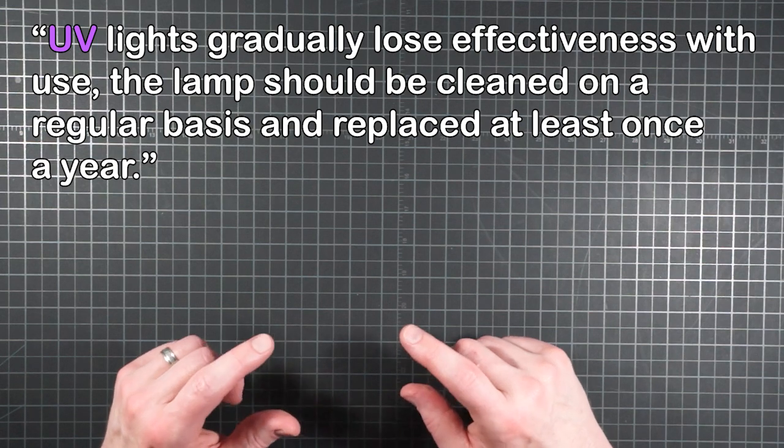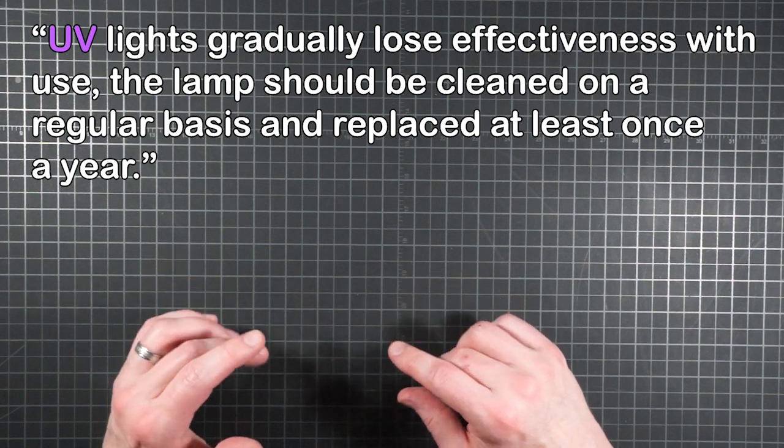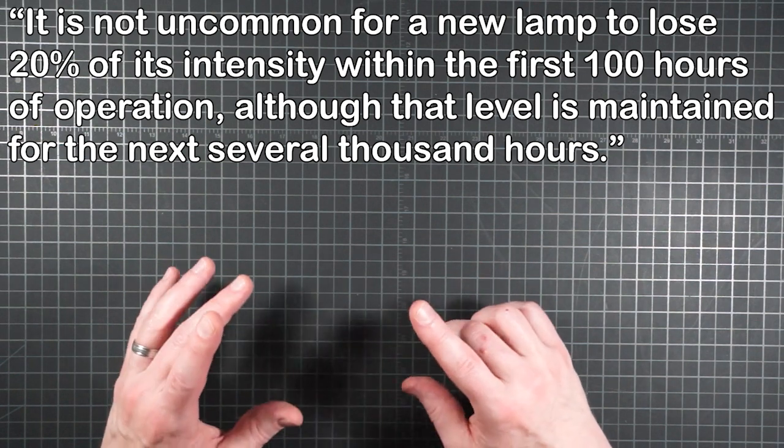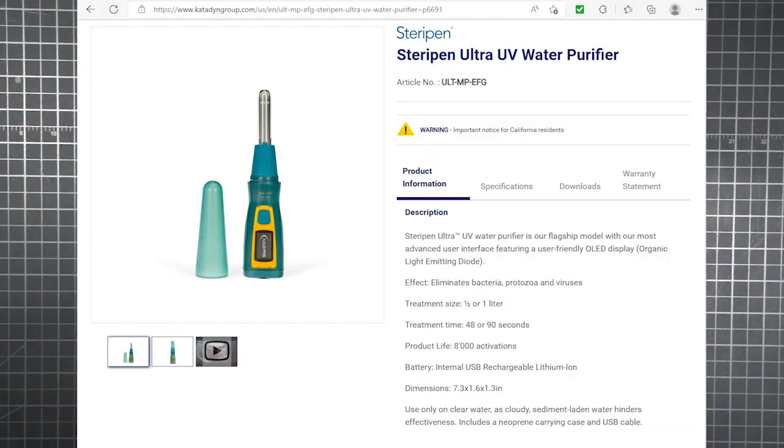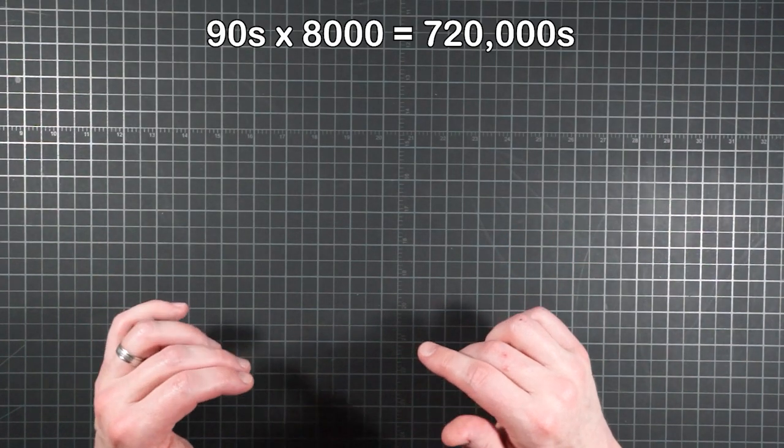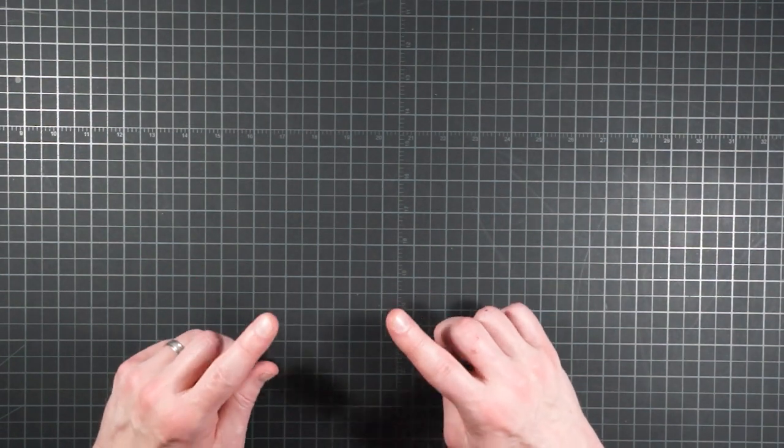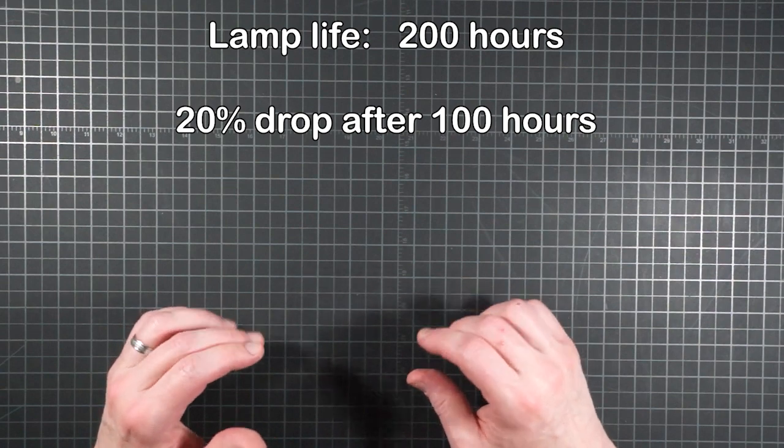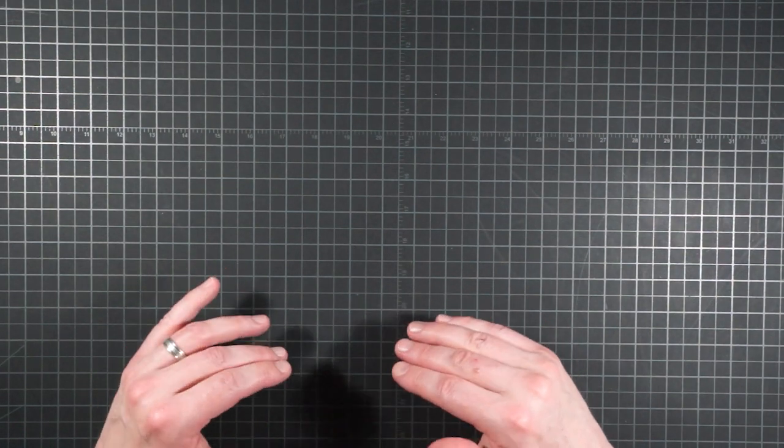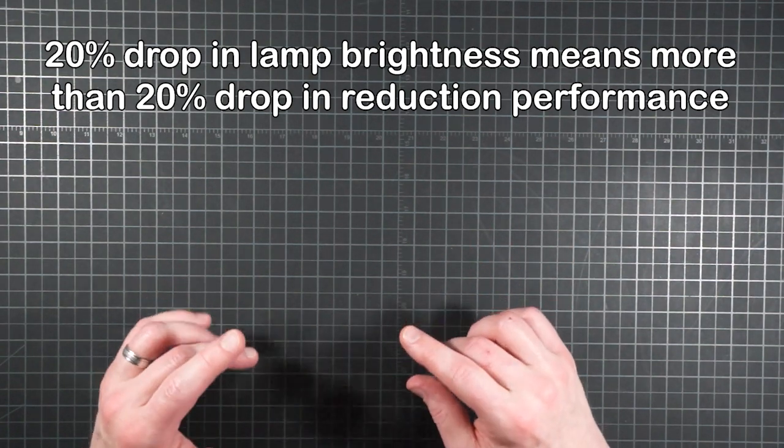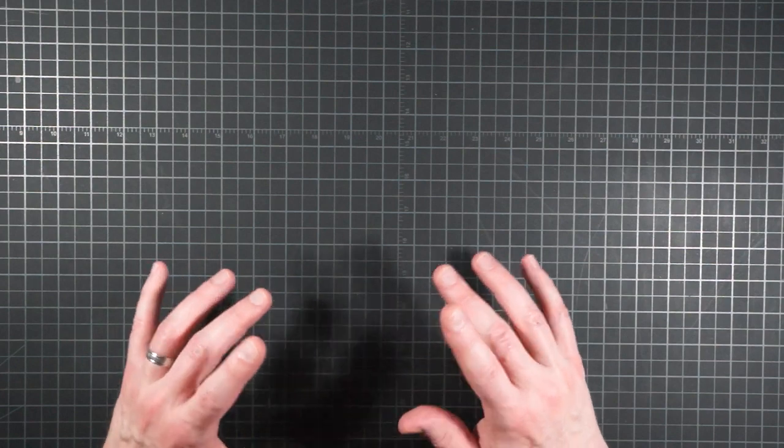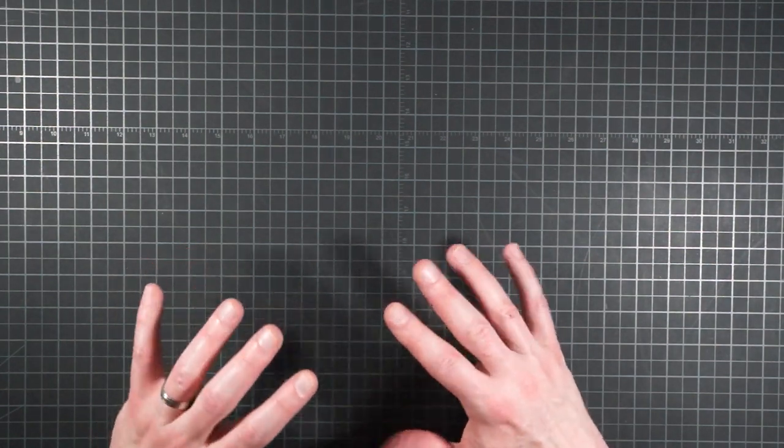From the Water Research Center, UV lights gradually lose effectiveness with use. The lamp should be cleaned on a regular basis and replaced at least once a year. It's not uncommon for a new lamp to lose 20% of its intensity within the first 100 hours of operation, although that level is maintained for the next several thousand hours. Recall some of the numbers for the SteriPen Ultra, which is rated for 8,000 activations at 90 seconds each. That's 720,000 seconds, or 200 hours of lamp time. If we assume the SteriPen's lamp is not immune to this effect, fully half of the device's rated life is after this potential 20% decline in intensity.